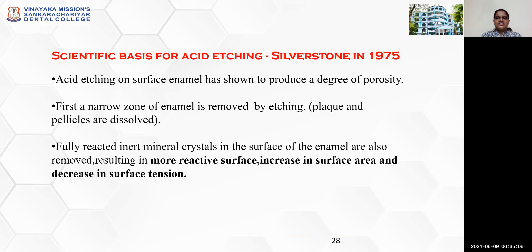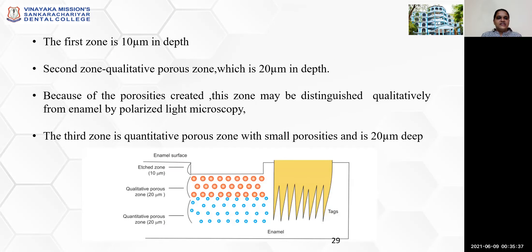The scientific basis for acid etching was given by Silverstone in 1975. Acid etching on surface enamel produces a degree of porosity. A zone of enamel is removed by etching — plaque and pellicles are dissolved, and fully reacted inert mineral crystals on the surface are also removed, resulting in a more reactive surface with increased surface area and decreased surface tension. The first zone is 10 micrometers in depth. The second zone is the qualitative porous zone which is 20 micrometers in depth, distinguishable by polarized light microscopy. The third zone is the quantitative porous zone with small porosities, also 20 micrometers deep.